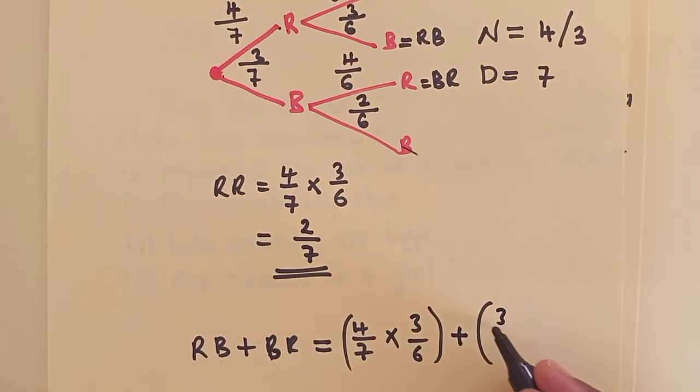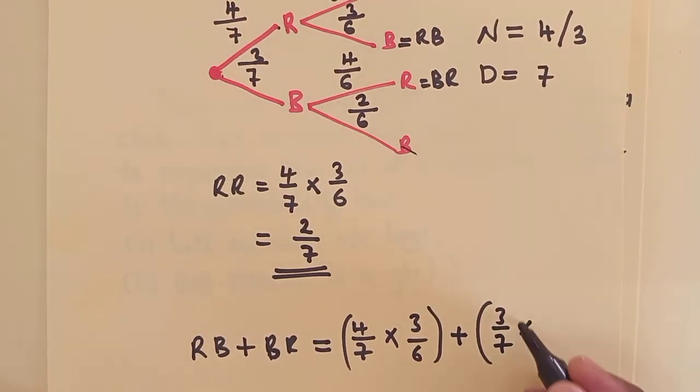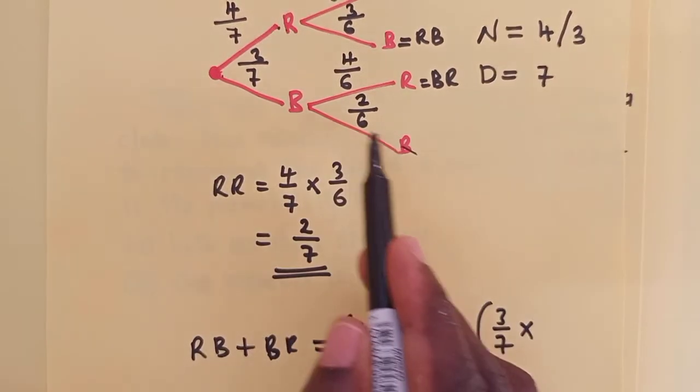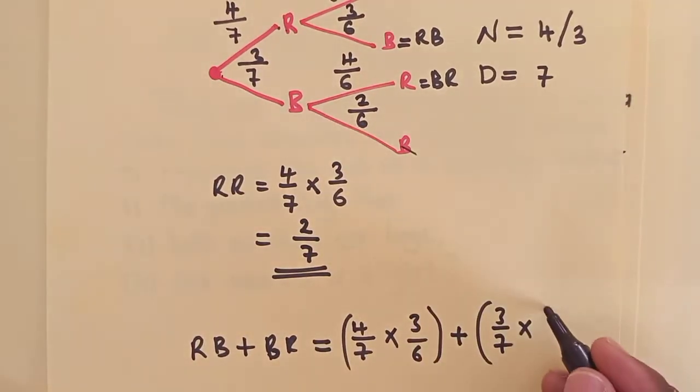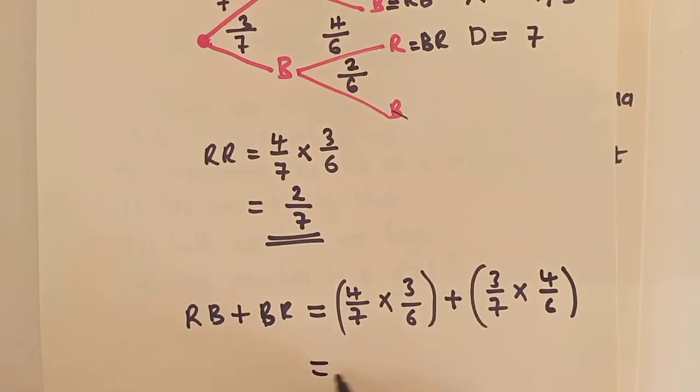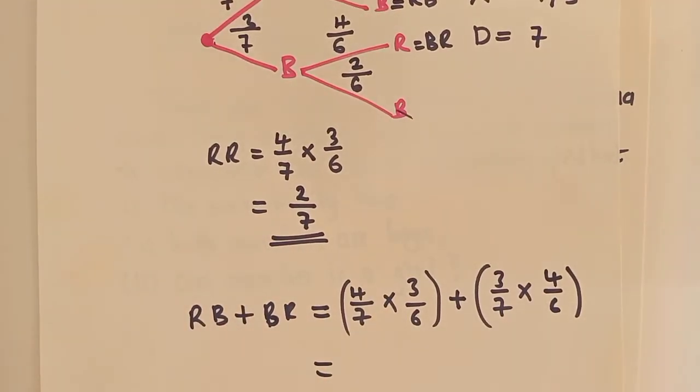Blue, it was a three over seven times. The other, the red here, because it's blue red. So red is a four over six. Just like that. And when we work out there, what are we getting?